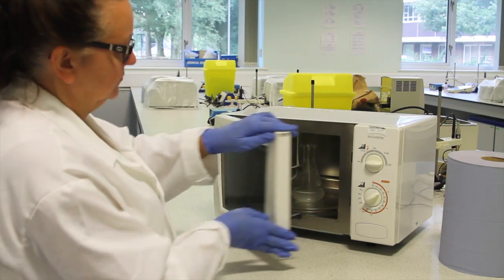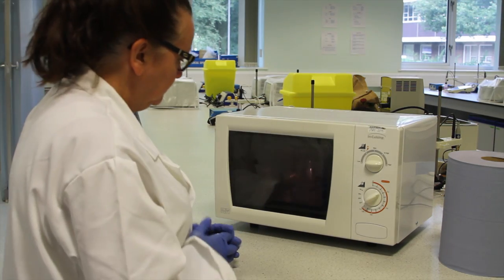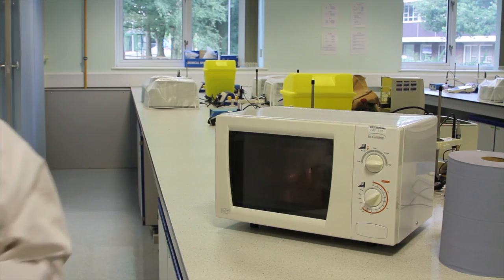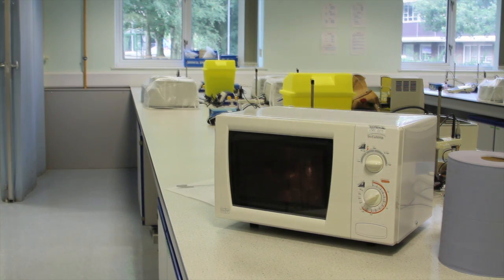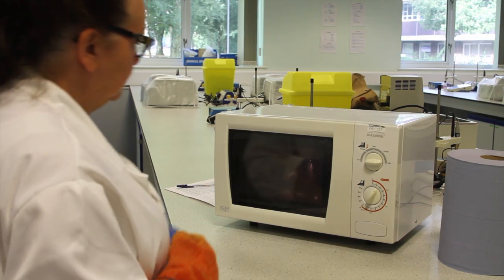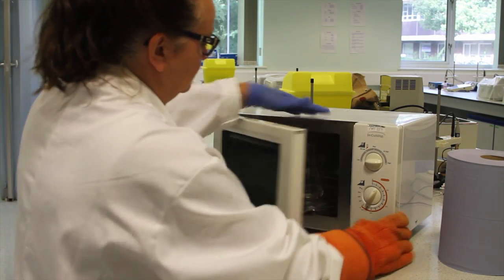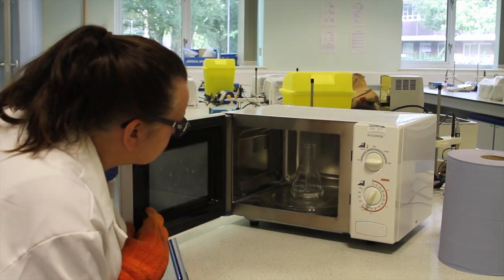Once the agarose is dissolved in the buffer, it needs to be allowed to cool to about 60 degrees before it is poured. Pouring it while it is too hot may cause the gel cast to buckle. Cool it too far and the gel will set in the flask.